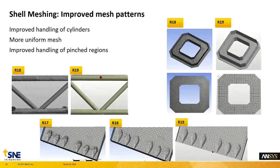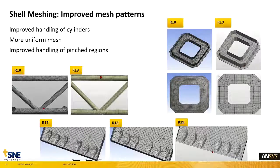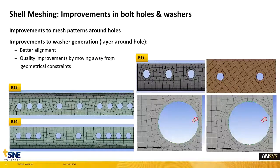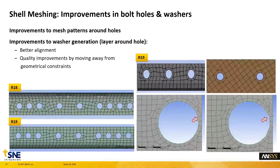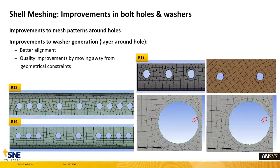다음은 Shell Meshing에 대한 부분입니다. 예전에 Shell Mesh에서 실린더 형상에 격자를 생성했을 때 실린더 형상을 온전하게 따라가지 못하는 부분이 있었는데, 18 버전과 19 버전에서 실린더 부분의 기본 격자 형상이 훨씬 더 좋아진 것을 보실 수 있습니다. 또한 홀 근처 격자 생성, 즉 와셔 생성에 대한 부분도 많이 개선되었습니다. 이전에는 홀 부분을 온전하게 따라가지 못하는 격자 형상이었다면, 19 버전에서는 홀 부분을 인지하여 균일한 격자가 생성되도록 기능이 향상되었습니다.